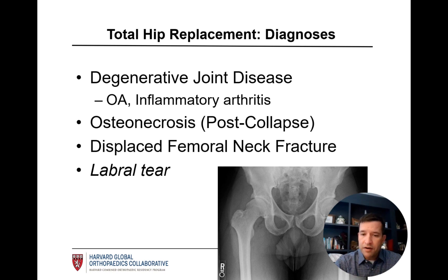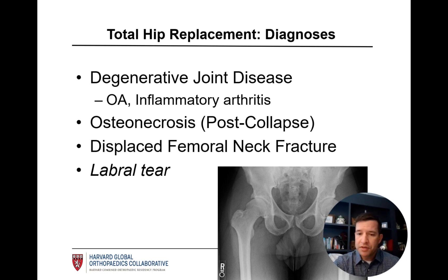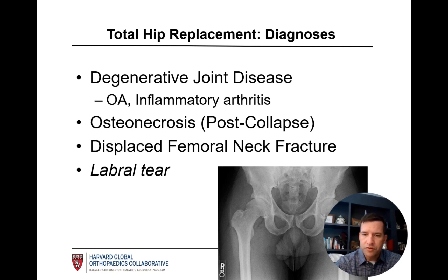There are also various inflammatory arthritides such as rheumatoid or psoriatic arthritis. Osteonecrosis, particularly if it's progressed past the point of subarticular bony collapse, is another appropriate diagnosis leading to hip replacement. In the trauma setting, we see displaced femoral neck fractures, particularly in the elderly population, sometimes leading to total hip replacement. And sometimes a labral tear may be an appropriate indication if the patient is of such an age or the tear is of an anatomic variant not likely to heal with surgery or other methods.